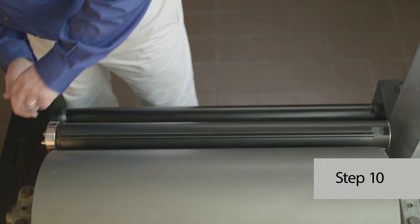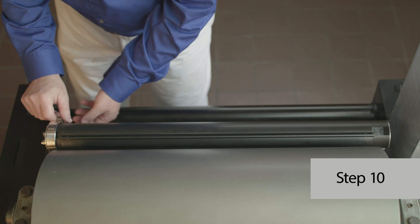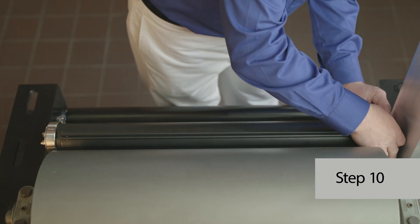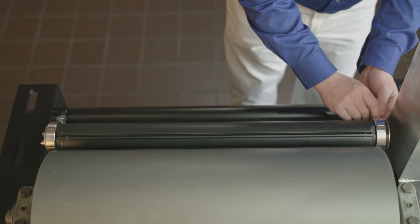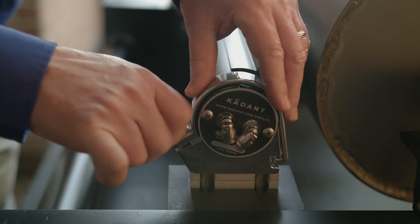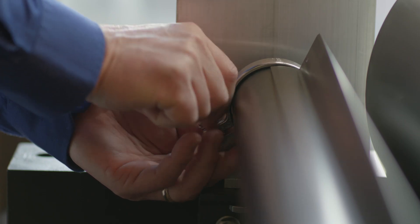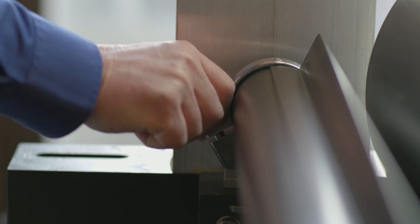Step 10, fasten each bearing top half, the clamp portion, to the bearing clamp cradle using the supplied fasteners. Leave hand tight as you will be adjusting the Verilite assembly during the setup and alignment procedure.